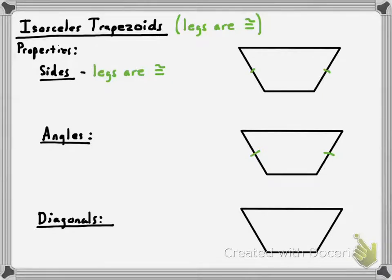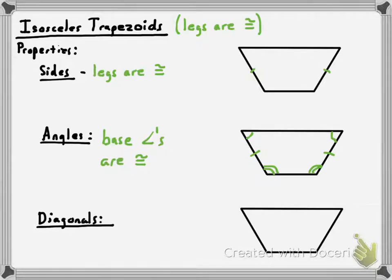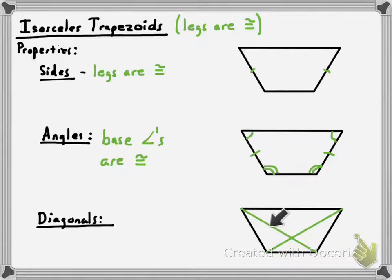Now you have two pairs of base angles, so the pairs of angles along the same base are congruent. That means these two angles along one base and these two angles along the other base are congruent with one another. The angles between the bases are still supplementary — this angle plus this angle is still 180 degrees, because it's a trapezoid. And when the trapezoid is isosceles, the diagonals are congruent. Note that the diagonals do not bisect each other in trapezoids, but they are congruent so long as it's an isosceles trapezoid.